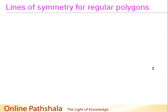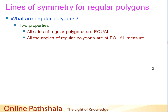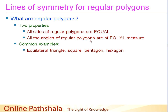Now let's discuss the lines of symmetry for regular polygons. First, let's quickly recap what regular polygons are. There are two important properties: all the sides of a regular polygon are of equal length, and all the angles are of equal measure. Common examples are an equilateral triangle, a square, a regular pentagon, and a regular hexagon.